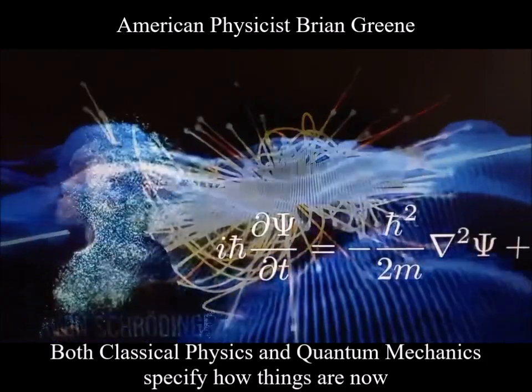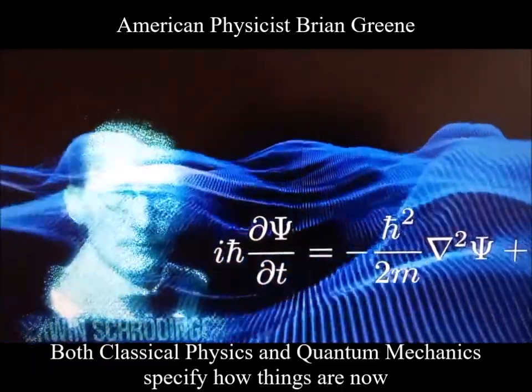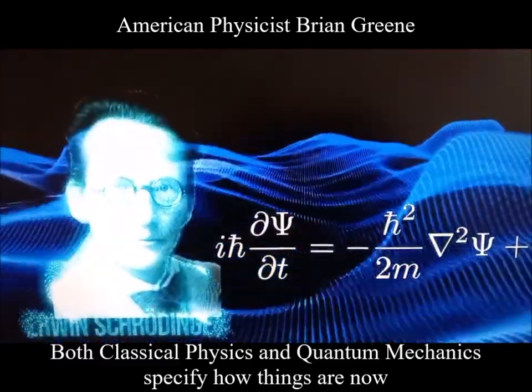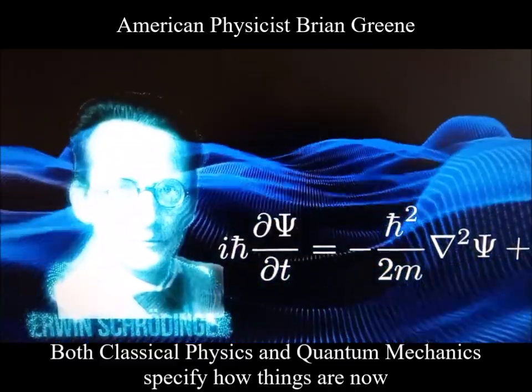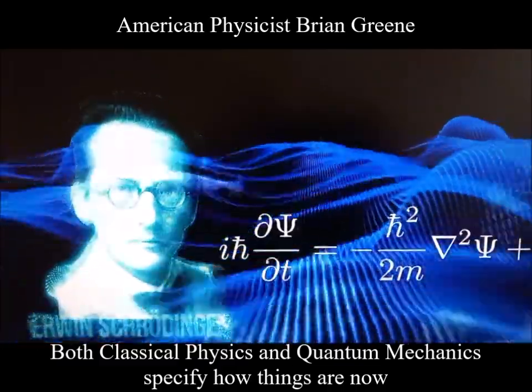in the quantum picture we specify how things are now, but the equations do something entirely different. They dictate the probability of how things will be later on.